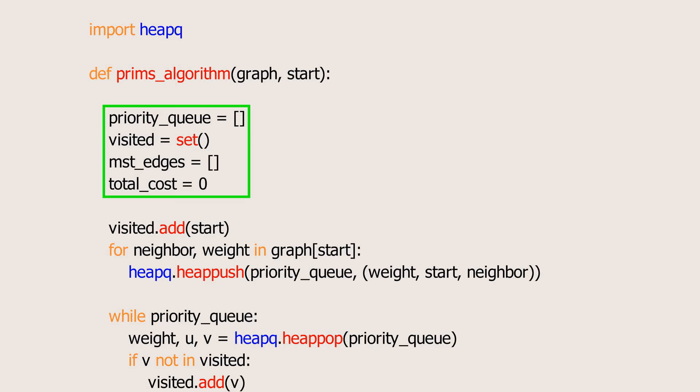First, a priority queue to store edges, a set named visited to store the visited nodes, MST edges to store the edges that will be part of the minimum spanning tree, and the total cost variable to store the total cost of the minimum spanning tree.